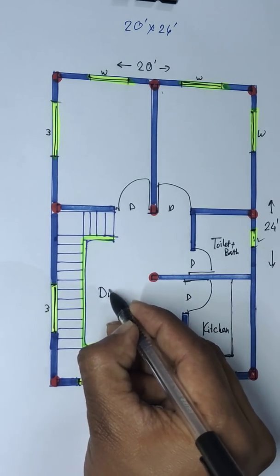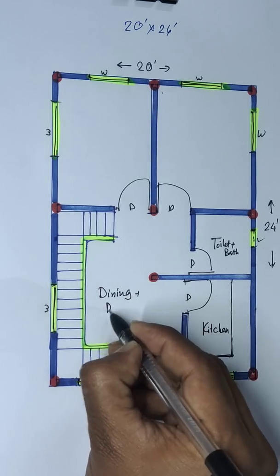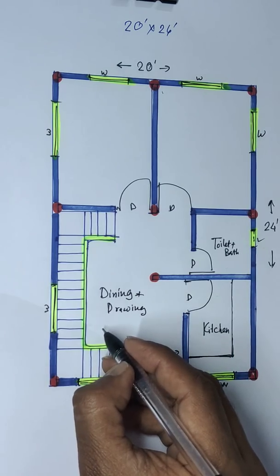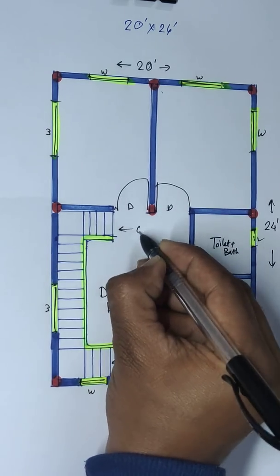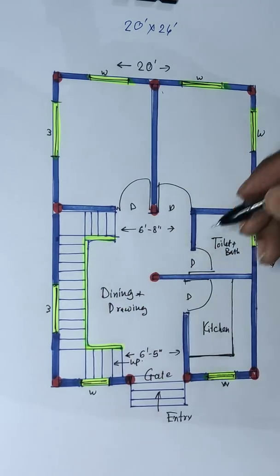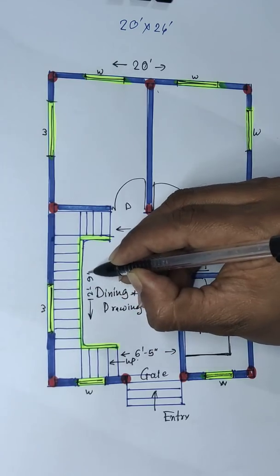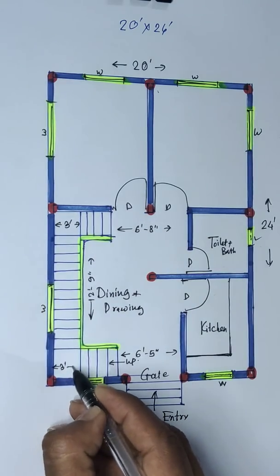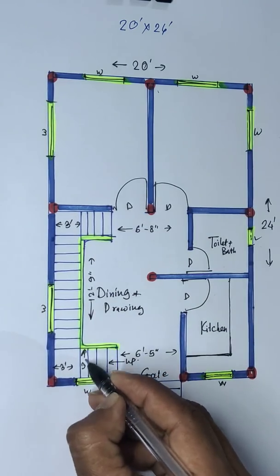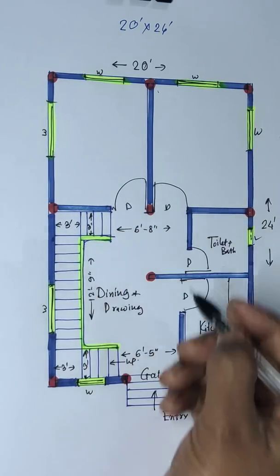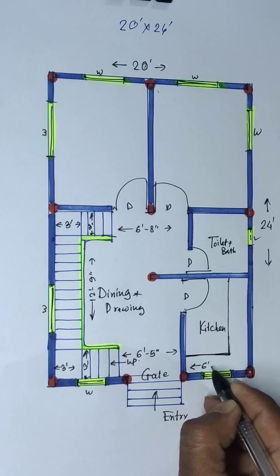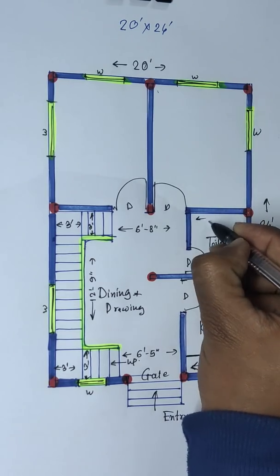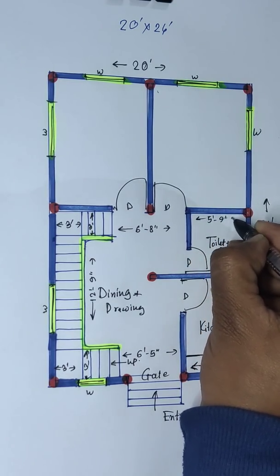This is a dining plus drawing area, small size. Small size dining and drawing capacity: 6 feet 8 inch. Total distance: 12 feet 9 inch. This side 3 feet wide, this side 3 feet wide, and this side 3 feet and this side 3 feet. Kitchen 6 feet and 7 feet 4 inch. Toilet 5 feet 9 inch.